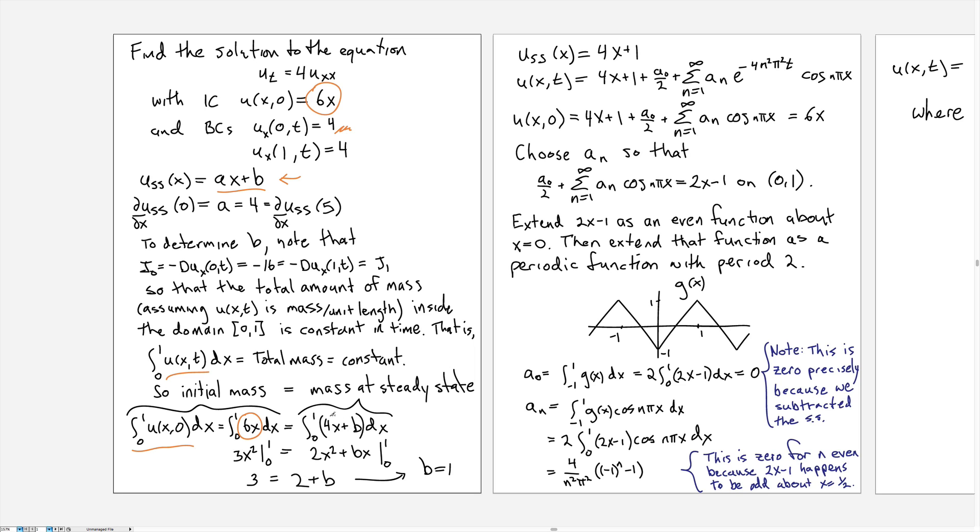But on the other side we have the mass at steady state, so we plug in 4x + b for the mass at steady state. So we integrate that and we get 2x² + bx all evaluated from 0 to 1. The 0 evaluation comes out to 0, so we just put in the 1 and we get 2 + b.